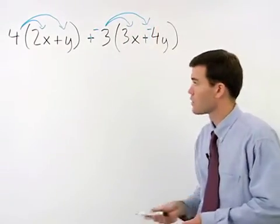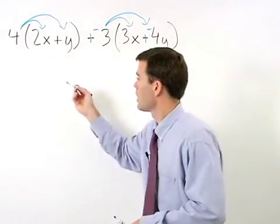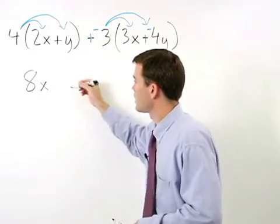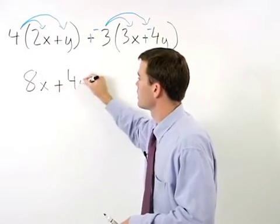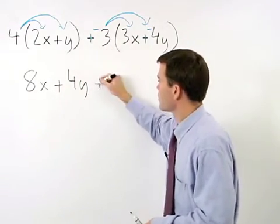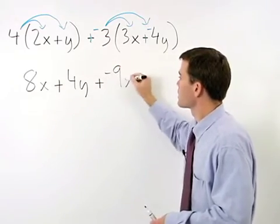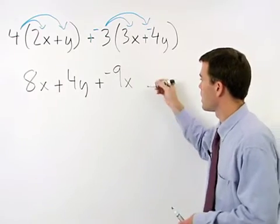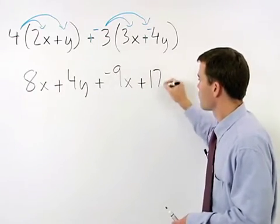That gives us 4 times 2x or 8x plus 4 times y or 4y plus negative 3 times 3x which is plus negative 9x plus negative 3 times negative 4y which is plus 12y.